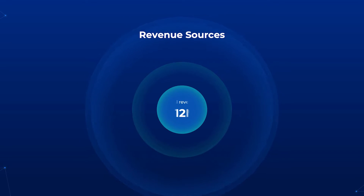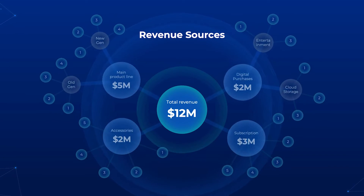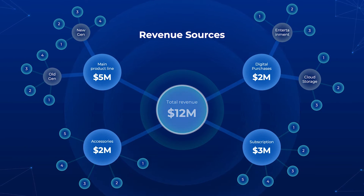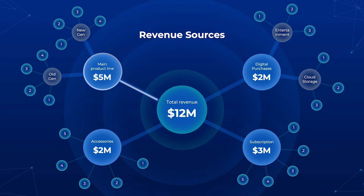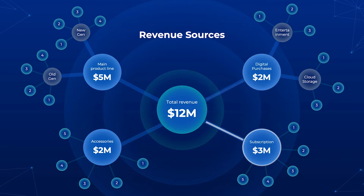Contrary to the common belief that mind maps are only used for brainstorming, they can also help organize complex data with their signature visual branches. Take revenue streams as an example. With the total company revenue at its center, managers can then map out different sources of income, like sales from a flagship product line, revenues from digital downloads, subscriptions, or sales from accessory products.